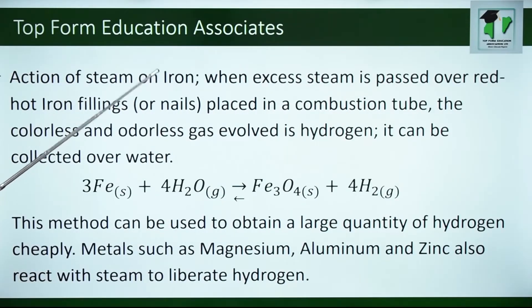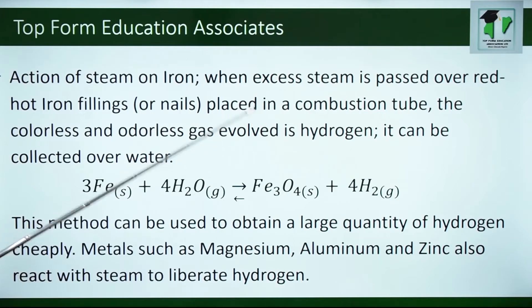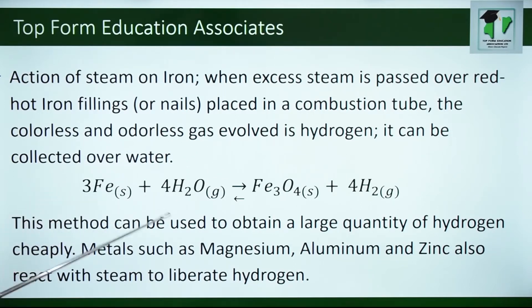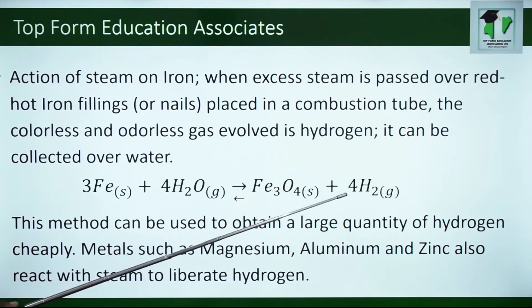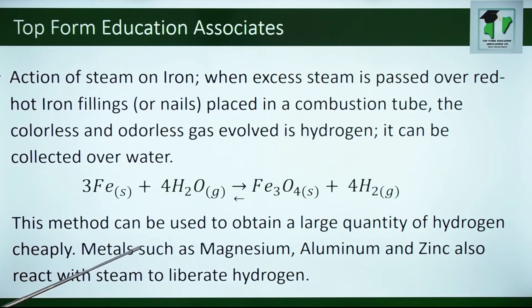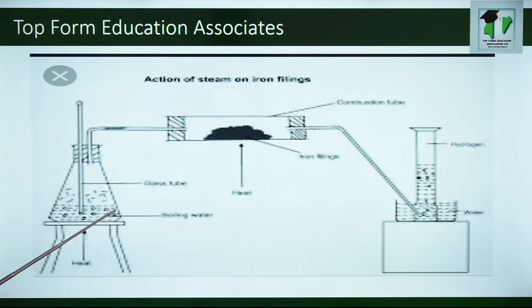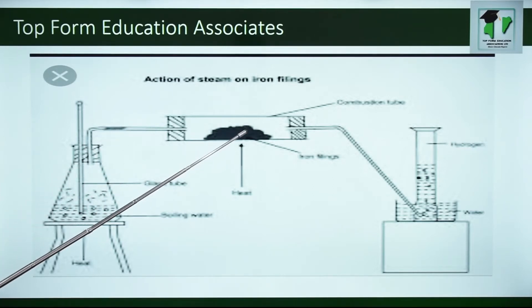Another method is by the action of steam on iron. When excess steam is passed over red hot iron filings or nails placed in a combustion tube, the gas evolved is hydrogen. It can be collected over water. You can see iron reacting with water vapor to form iron 3 oxide and hydrogen gas. This method can be used to obtain a large quantity of hydrogen cheaply. Metals such as magnesium, aluminum and zinc also react with steam to liberate hydrogen gas. In this diagram we can see boiling water going through displaced steam to the iron filings to generate hydrogen gas.